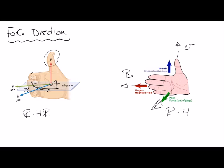This default rule applies for the positive charge. If the charge is negative, the force direction will be opposite. So in one case the force will be downward for the negative charge; in the other, the force will be directed into the page — opposite to the positive charge result. Just apply the rule for the positive charge and reverse the direction for a negative charge. Some people use the left hand for negative charges, but to avoid confusion, simply reverse the positive-charge result.